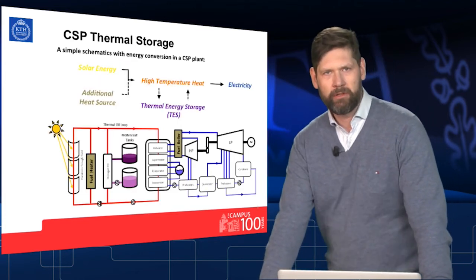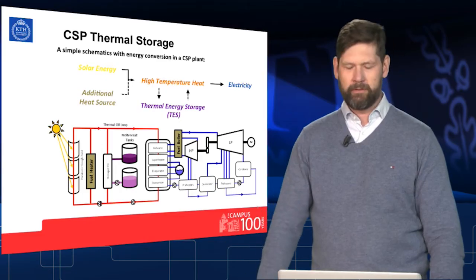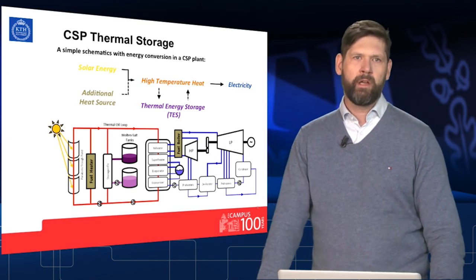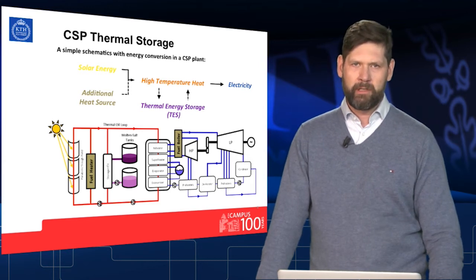A key feature of this technology is that we can easily store the energy. Instead of storing electricity in batteries, which is pretty expensive, we can store energy in the form of heat. I show a schematic of a solar power plant where the heat is stored in molten salts in two big tanks — a hot tank at about 600 degrees and a cold tank at about 200 to 300 degrees. The heat difference is used to produce steam and drive the steam turbine, allowing us to produce electricity during night time.